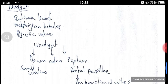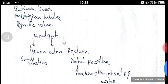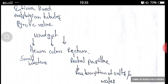The hindgut is also called proctodeum. It consists of an intima lining layer. It contains Malpighian tubules and pyloric valve. The hindgut is divided into three portions: ileum, colon, and rectum. In some areas it is pronounced as ileum and in some places as ileum. Ileum is the small intestine. Colon may be present or absent. The rectum consists of rectal papillae, which help in absorption of salts and water.